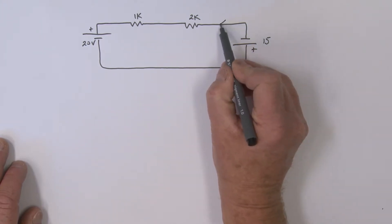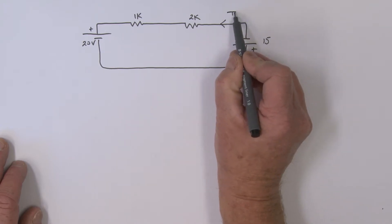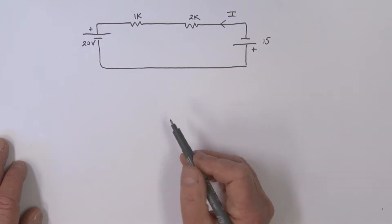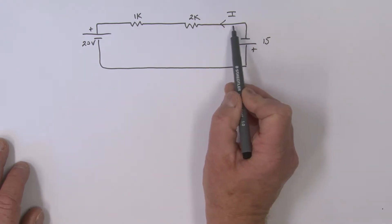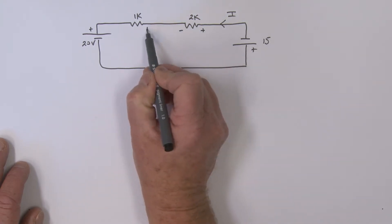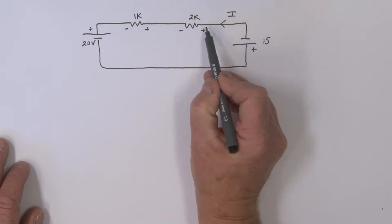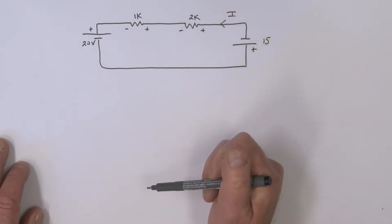As before, we're going to define our current direction. We've got an arbitrary choice here, but I'm going to define it in this direction. It is very important to label our voltages consistent with that current direction. If the current is going in this direction, I'm going to label this plus minus. The current is flowing from a high to a low—it is that convention that we still need to preserve, and that will keep us out of a lot of trouble.